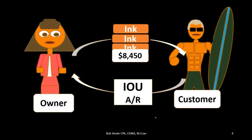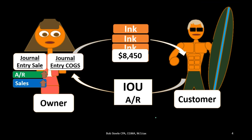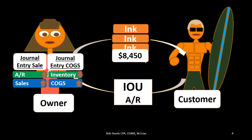If we look at a periodic system, we consider this same sale differently. We still have the first journal entry — accounts receivable going up and sales going up. But the second journal entry we will not record at the time of sale. In a perpetual system, we record the reduction in inventory and the cost of goods sold at the point of sale — we sold the ink, gave it away, got the receivable — but in a periodic system we do not. We only record the first component.